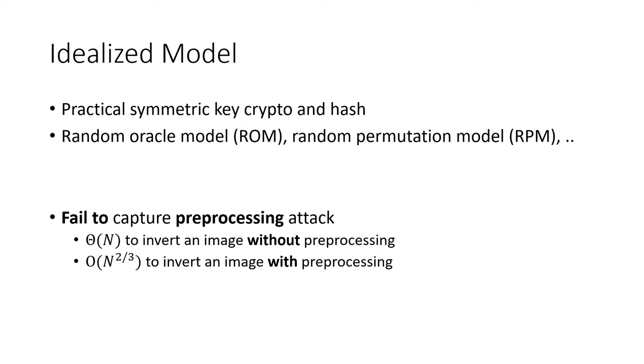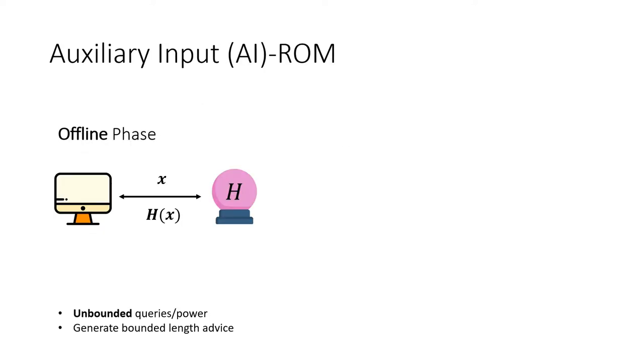Let's look at the formal definition of idealized models with pre-processing. For this talk, let us focus on the random oracle model. When an adversary in the random oracle model is allowed to do pre-processing, we call such model aux-input random oracle model, or AI-ROM. There are two phases in the model. The first one is called the offline phase. An unbounded adversary can arbitrarily interact with the random oracle, making unbounded queries. But at the end of the day, it produces a piece of advice of length s.